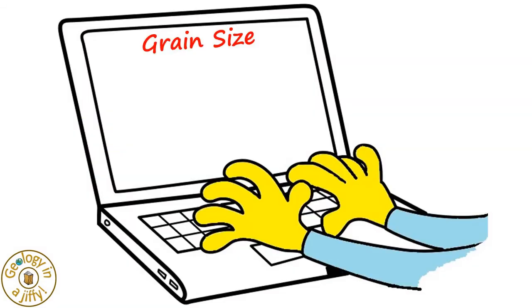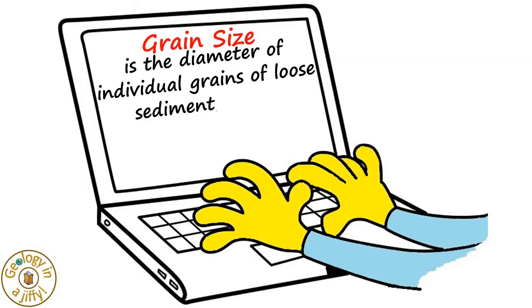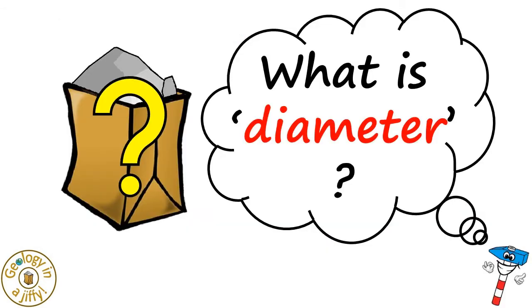Grain size is the diameter of individual grains of loose sediment, or the particles in sedimentary rock. But what is diameter? Well, think of this grain of sediment. The distance across its widest point is its diameter.